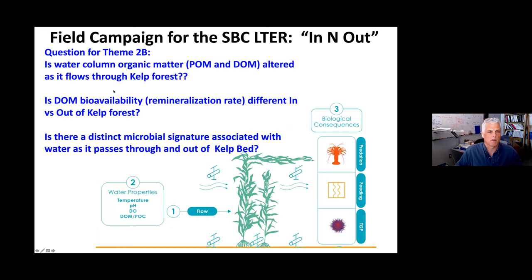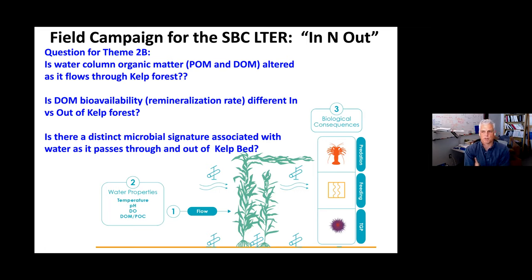To review, the questions we want to address in Theme 2B: is water column organic matter altered as it flows through the kelp forest? What are the bioavailability and remineralization rates, and how do they differ inside versus outside the kelp forest? Is there a distinct microbial signature — both in terms of phylogenetic structure, community structure, and microbial activity — associated with passage of materials through the kelp bed? These questions have been addressed in past work by Chance and Anna, and also in experiments conducted just over the last several weeks, which Chance will now highlight.